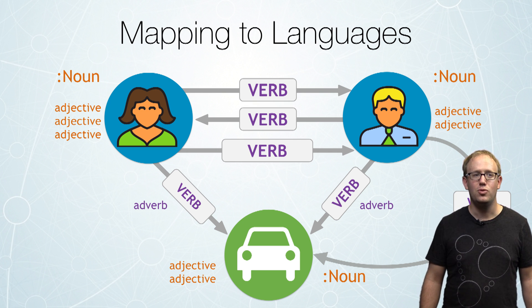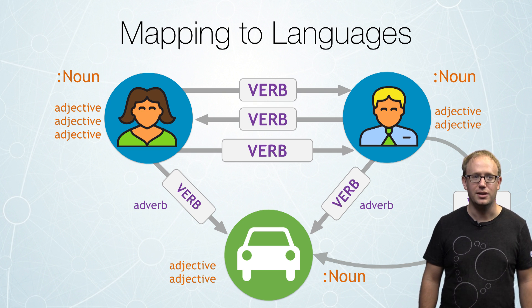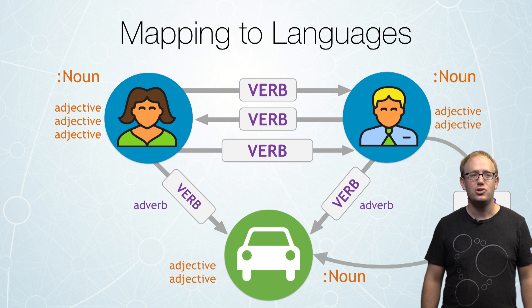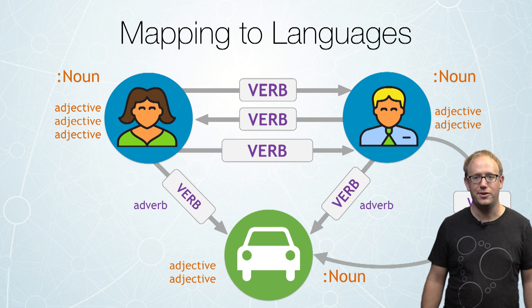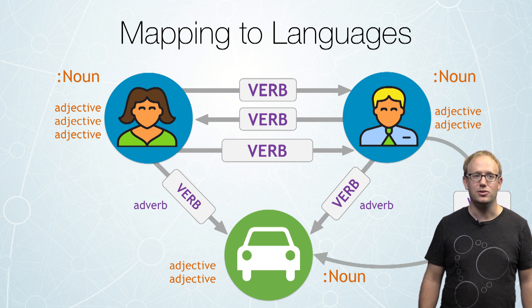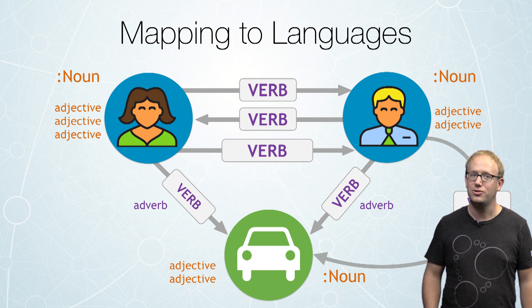This is a quite simple way to think about how you should model your data — making sure that as you walk the graph, as you traverse the graph that you've modeled, you can speak about it using the English language or the language of your choice.